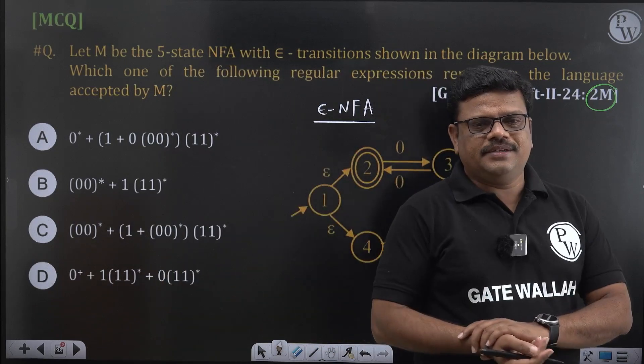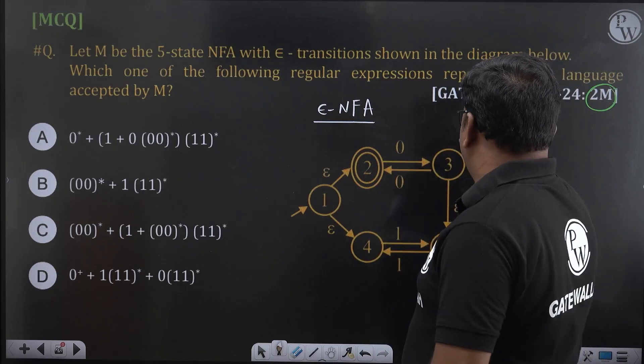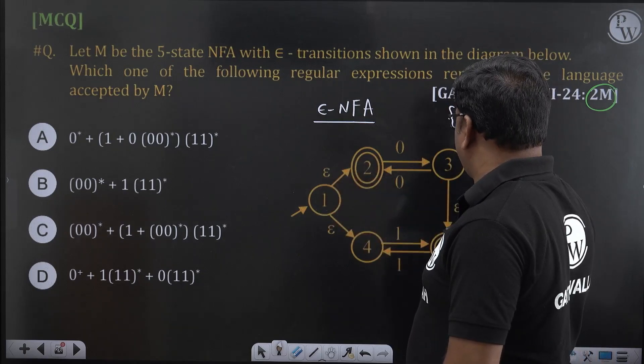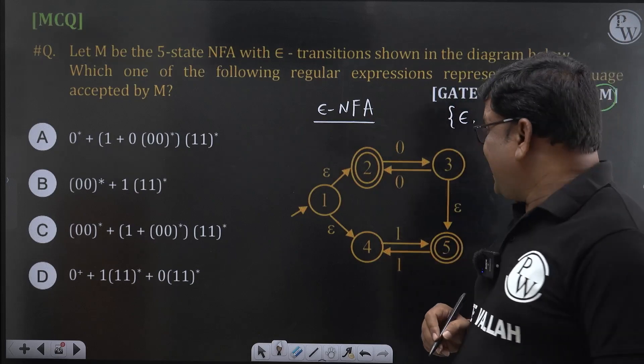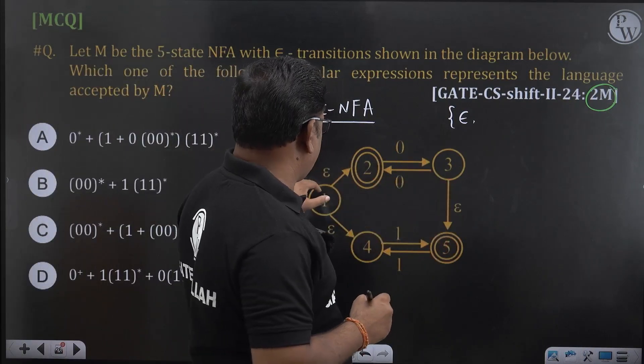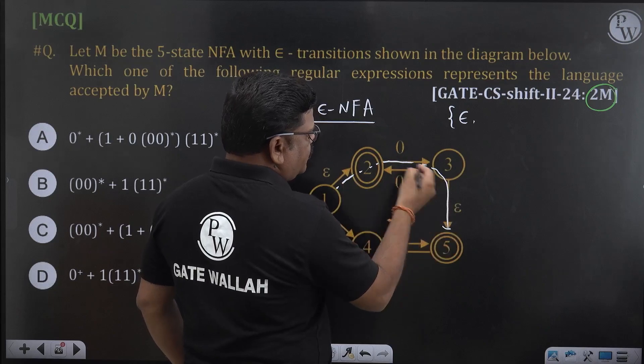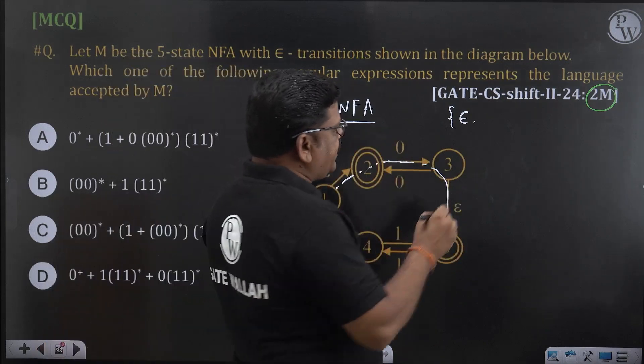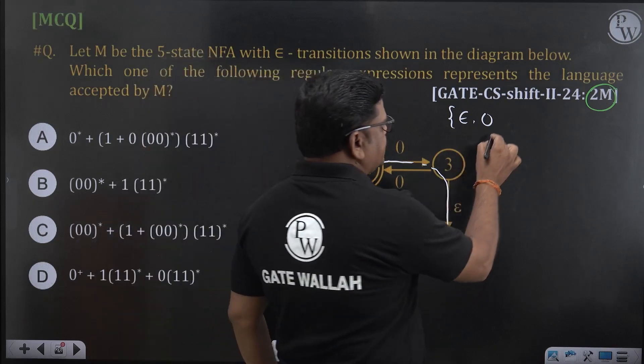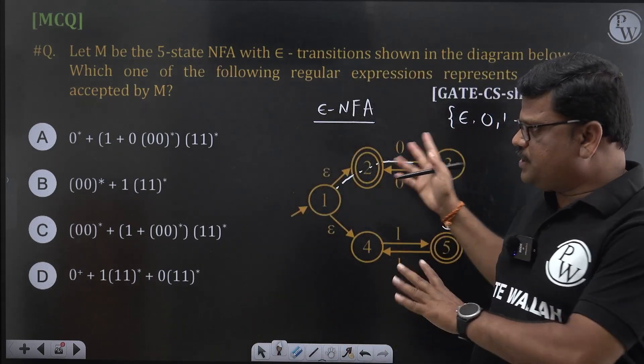If you observe here, is it accepting? Let us try to generate some of the strings accepted by this one. What are the strings accepted by this automaton? If you write here from the initial state by reading epsilon, we are reaching final. So, epsilon is accepted by this, it is accepting epsilon. Now, is it accepting 0? Yes, epsilon 0, epsilon 0 epsilon, that is also 0. That is why this automaton will accept 0 as well. Is it accepting 1? Epsilon 1, yes. Like this there are some strings here. Based on this, we will perform with this information we can eliminate so many options.